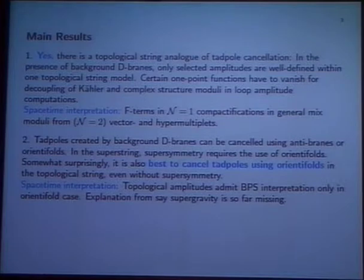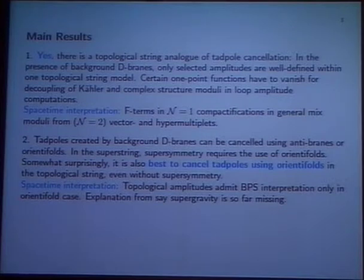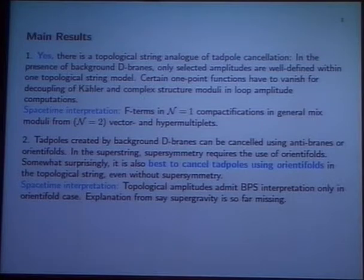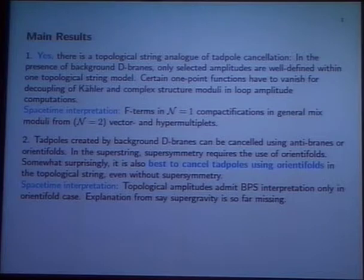The status of these statements is slightly different. For the first one, there is a fairly clear understanding from the worldsheet where the condition comes from. However, it's difficult to compute an example — I can show you the mixing of Kähler and complex structure moduli. On the other hand, in the second statement, you can compute; it's not too difficult. However, I don't really understand where this comes from from the spacetime perspective.